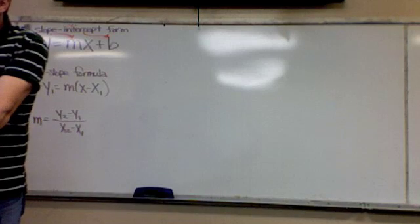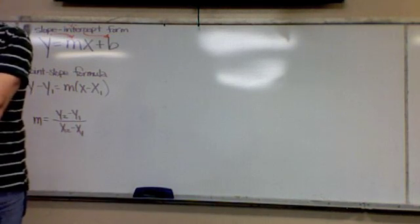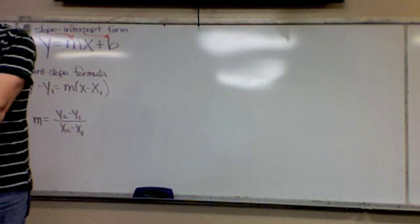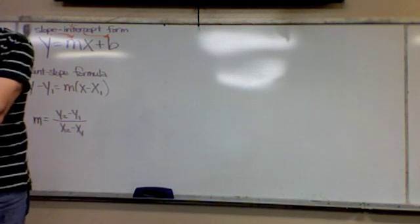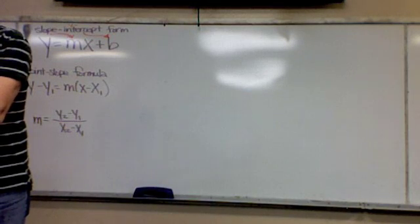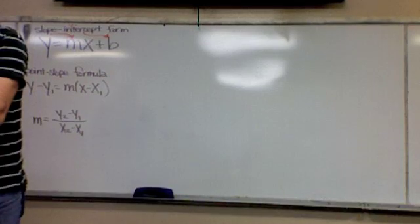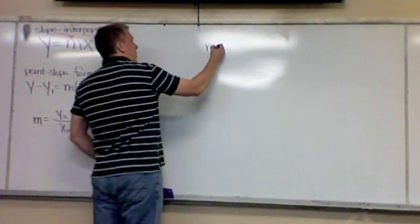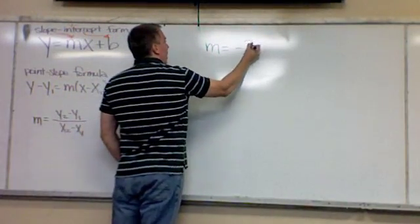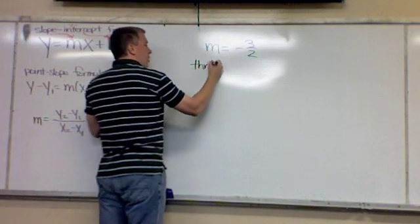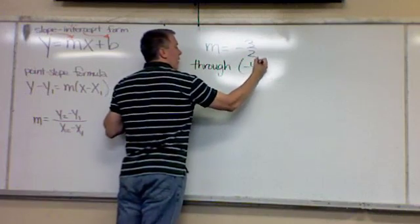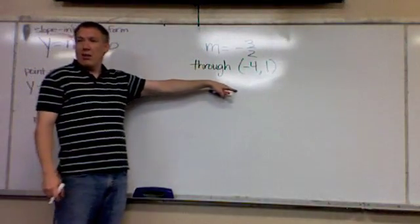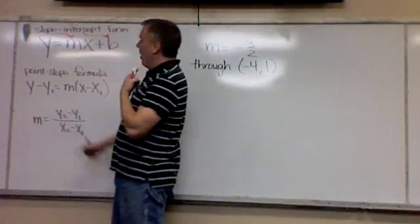Let me read this problem, then I'm going to write it up. Write an equation in slope-intercept form for the line that has a slope of negative 3 halves and passes through negative 4, 1. So what's the slope? Negative 3 halves. And where does it go through? Negative 4, 1. What's this called? Slope. What's this called? Point. Point-slope.